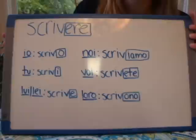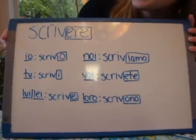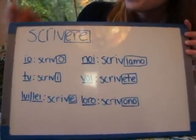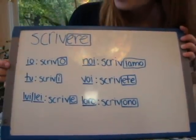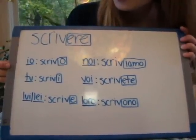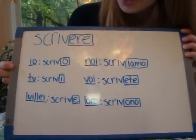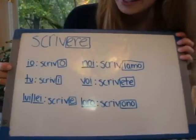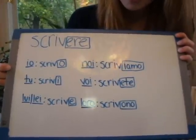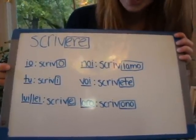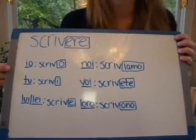For example, to conjugate the verb scrivere, the forms are: io scrivo, tu scrivi, lui lei scrive, noi scriviamo, voi scrivete, and loro scrivono.